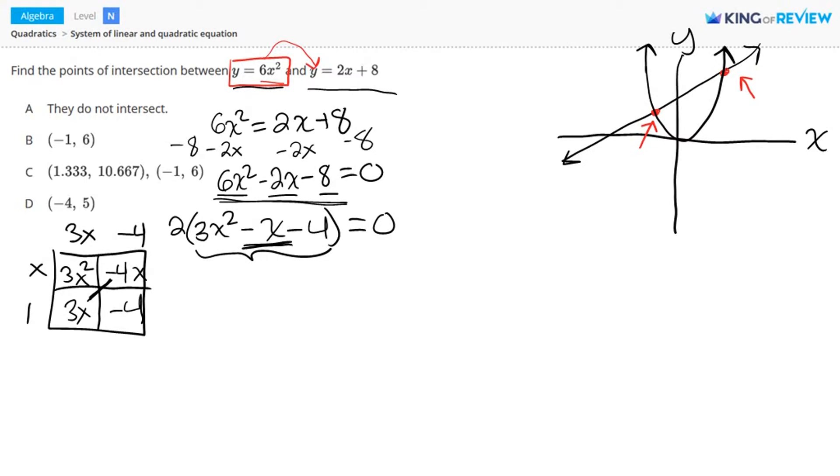So now we've factored as 2 times 3x minus 4 times x plus 1 equals 0. Now we want to consider something called the zero product property. If we have two numbers, let's call them a and b, and if we multiply them together to get zero for the answer, this means that either a or b must be zero to get zero for the answer. So we could have a times zero equals zero, or zero times b equals zero. Applying this to our problem, if I set either of these two terms equal to zero, I'll get zero for the answer here. So let's do that.